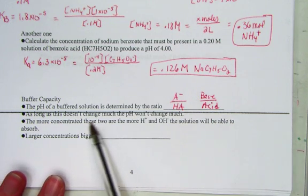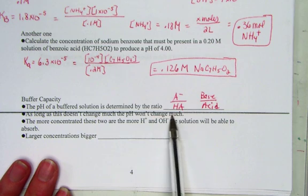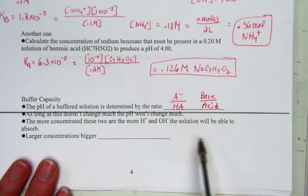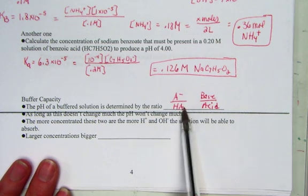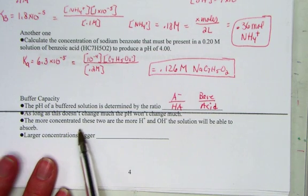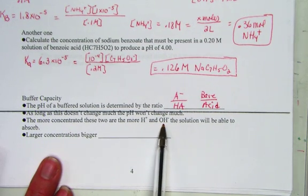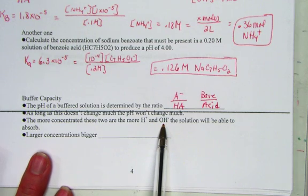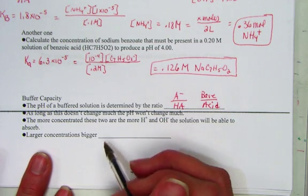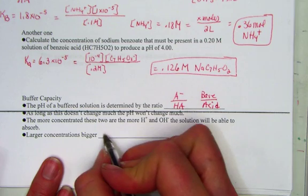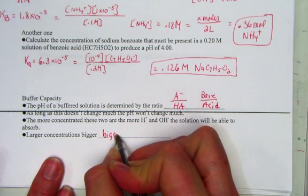So as long as this doesn't change much, the pH won't change much, this ratio of A negative to HA, the base over acid. The more concentrated these two are, the more hydrogen ion and hydroxide ion the solution will be able to absorb. So the larger the concentrations, the bigger the buffer capacity.